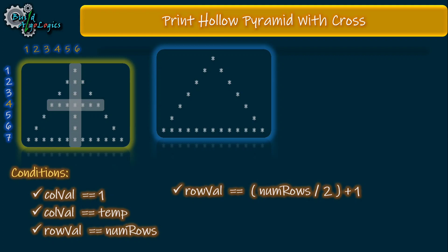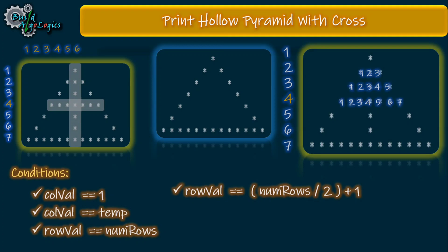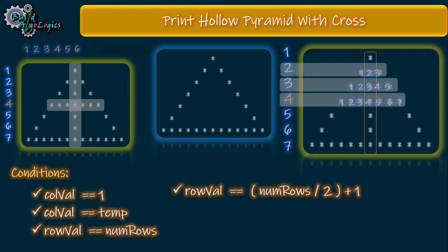I highly recommend watching previous tutorials if you have any doubts about these conditions. Now let's derive our second extra condition to print the second part of the cross. If we number the positions, these stars are printed when the column value equals the row value — for example when row is two, the star is at column two; when row is three, the star is at column three, and so on. According to this relation, we can derive our final condition. Now let's write our code.